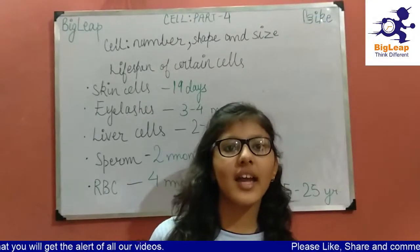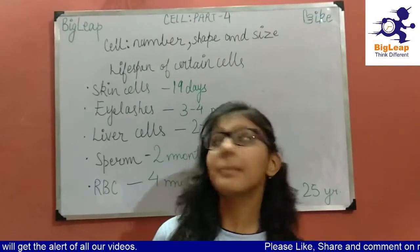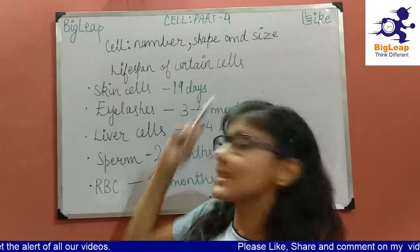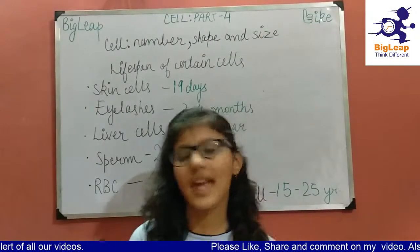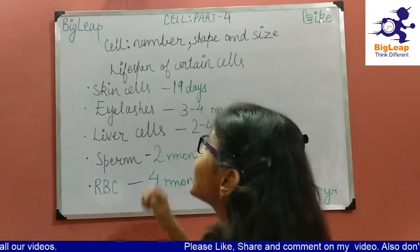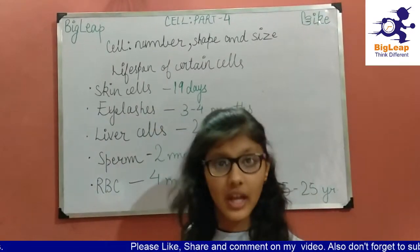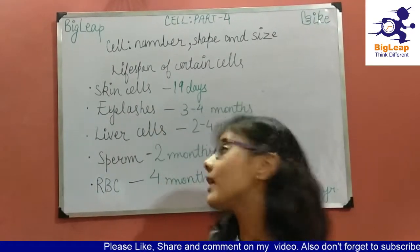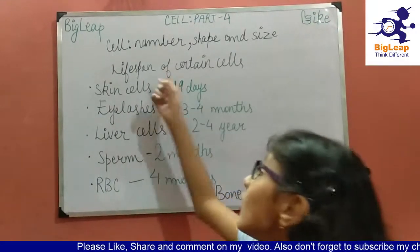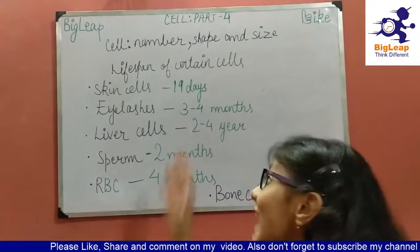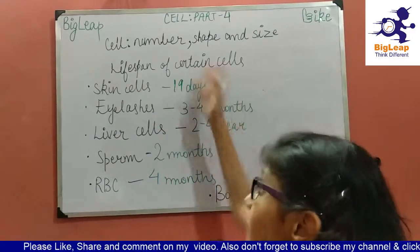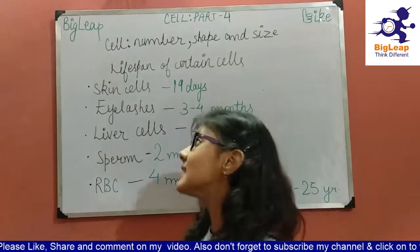We are back again with another part — this is part 4 on cell. We are building on the topic of cell number, shape and size. Let's see the lifespan of certain cells.